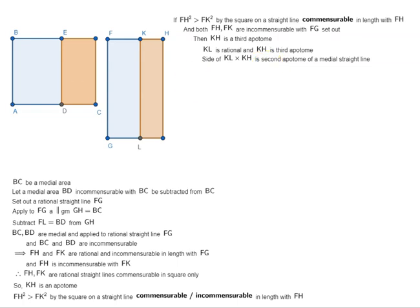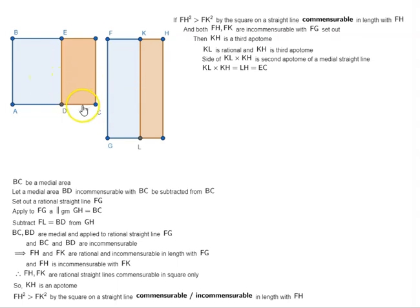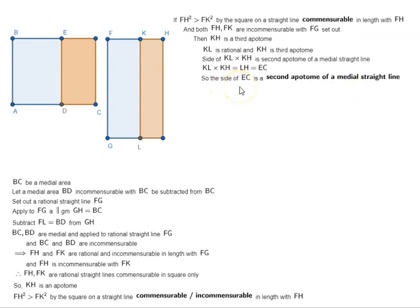We have already proved this in a previous proposition. Now KL by KH equals the area LH, and LH equals EC. This is because GH equals BC and FL equals BD, so the remainder LH equals the remainder EC. Therefore the side of EC is a second apotome of a medial straight line — where the side of EC means the side of a square whose area equals the area EC. So we have arrived at one conclusion based on this condition.